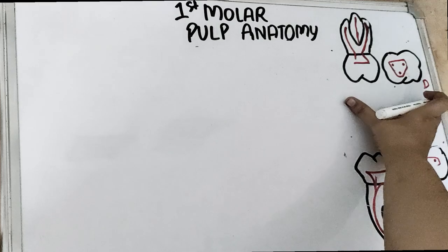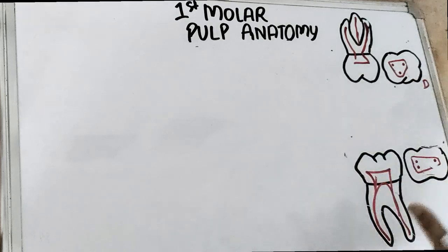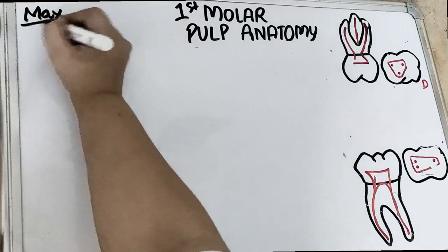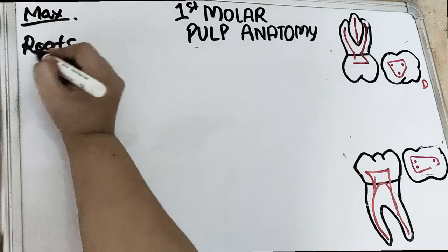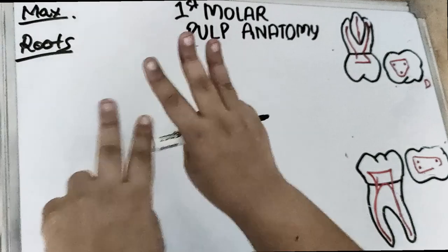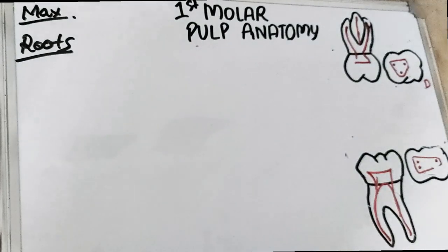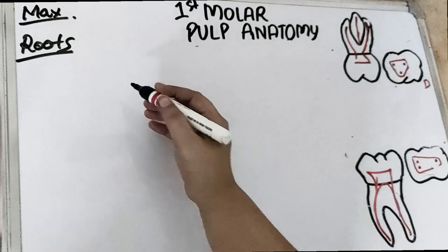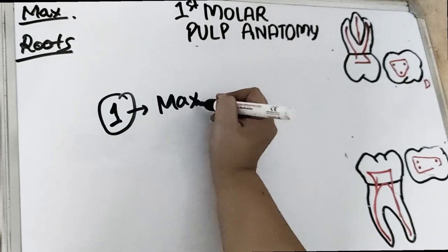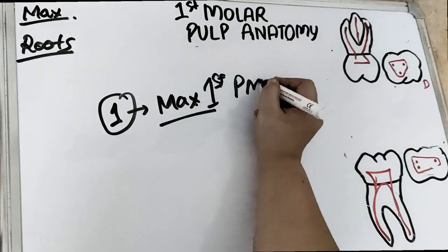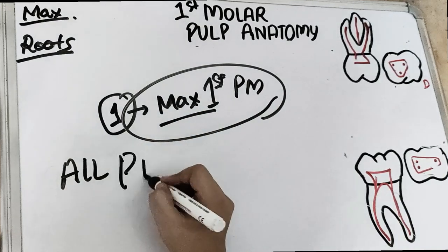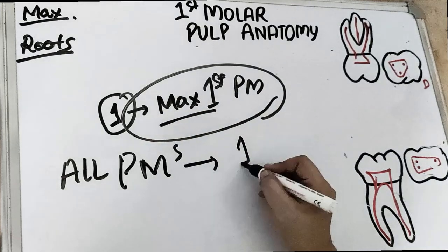Starting with the maxillary — this is the maxillary, and this one is the mandibular first molar. The maxillary first molar has got three roots. All maxillary molars have three roots. On the other hand, all premolars have only one root except the maxillary first premolar, which has got two roots. Other than that, all premolars have only one root.